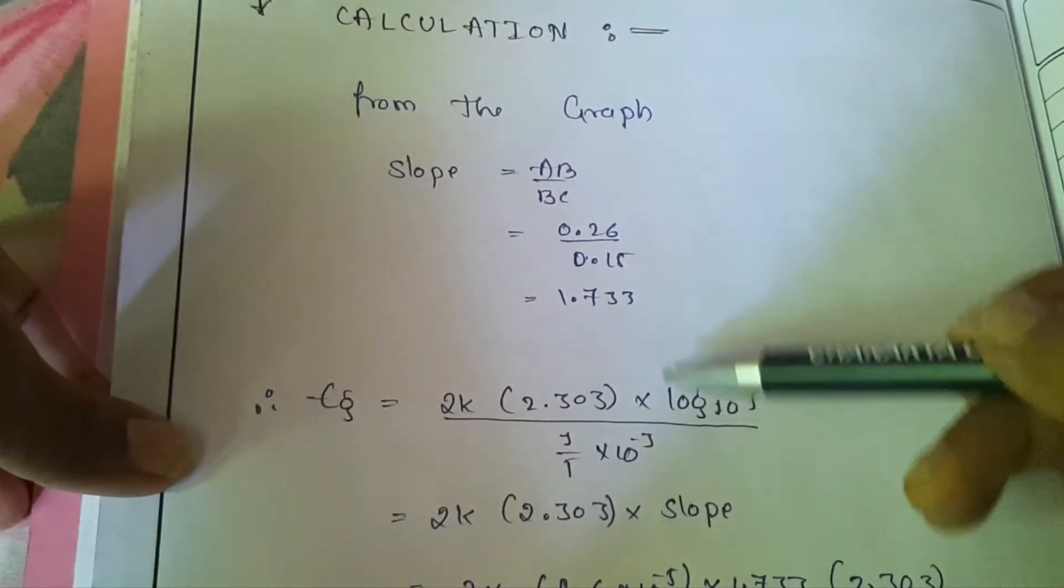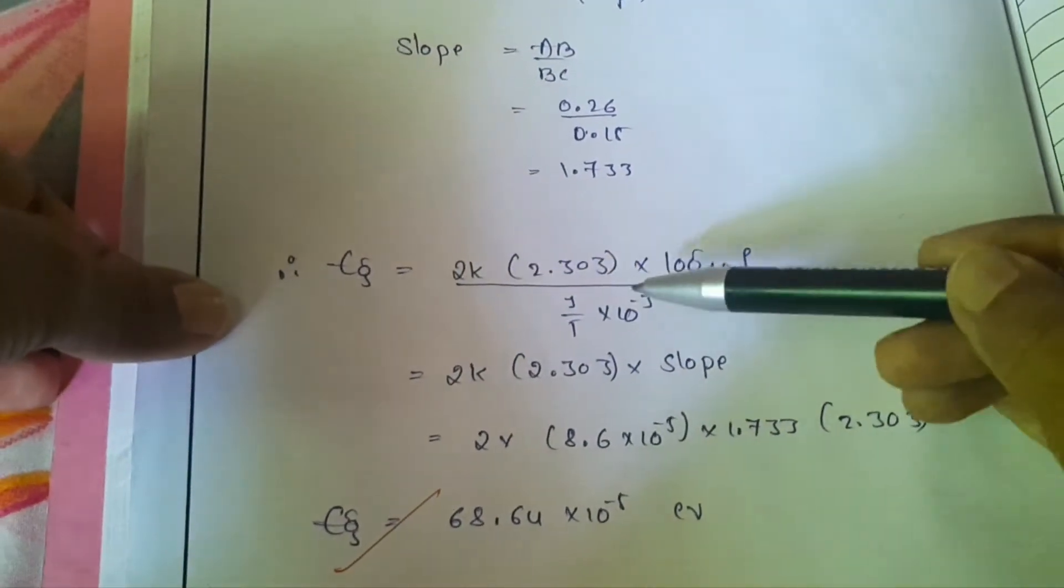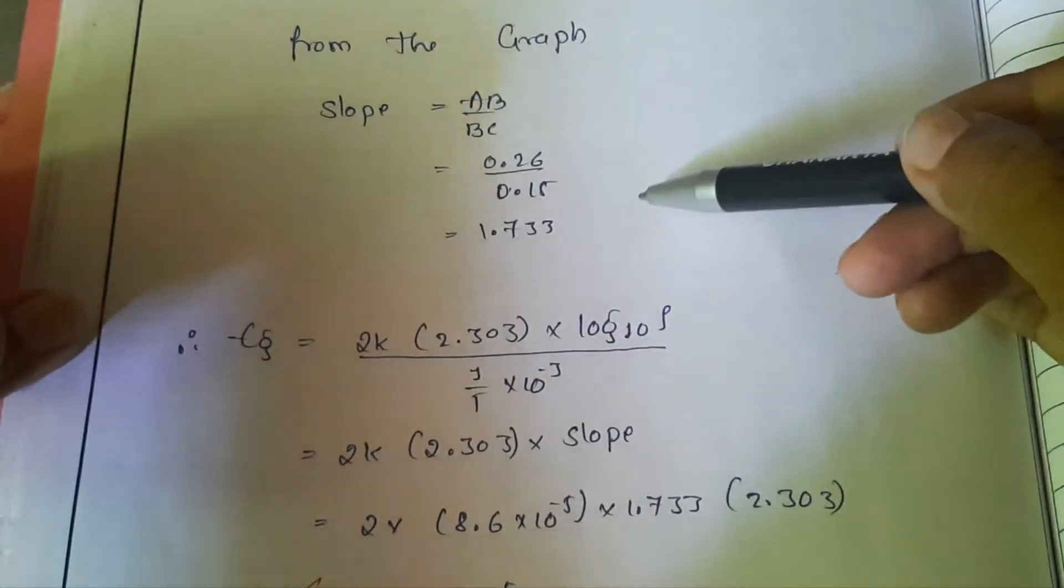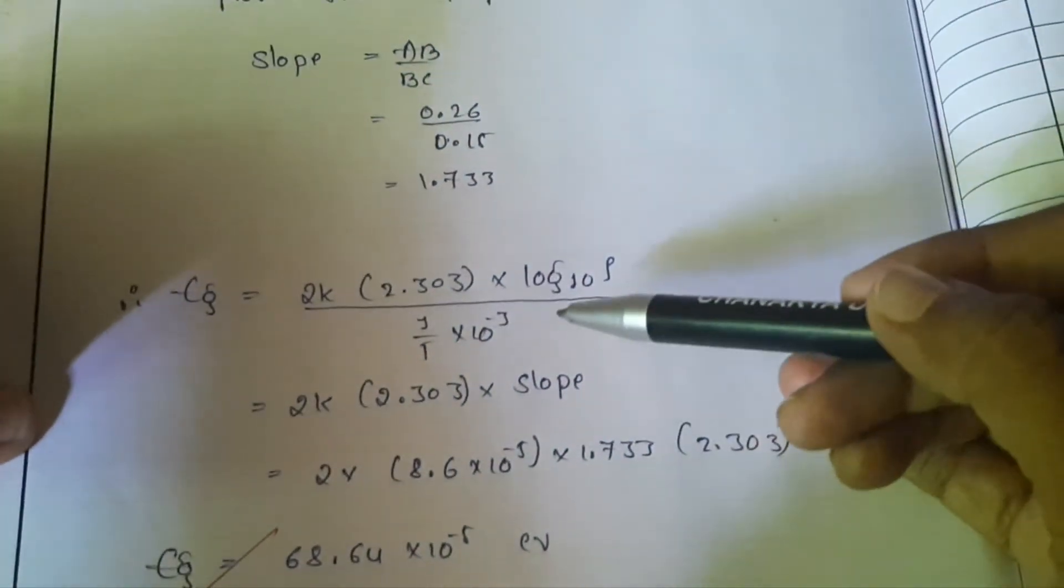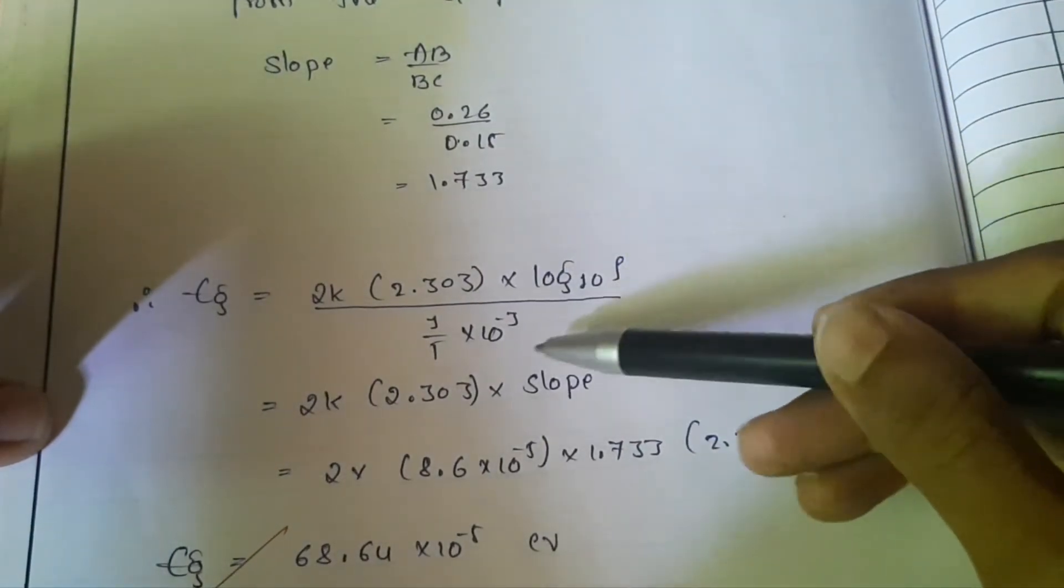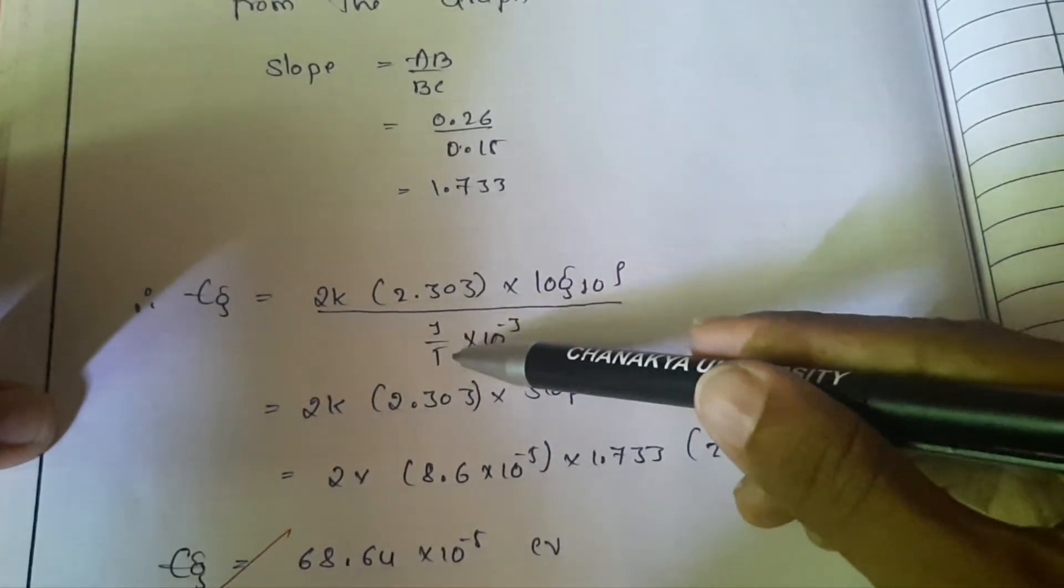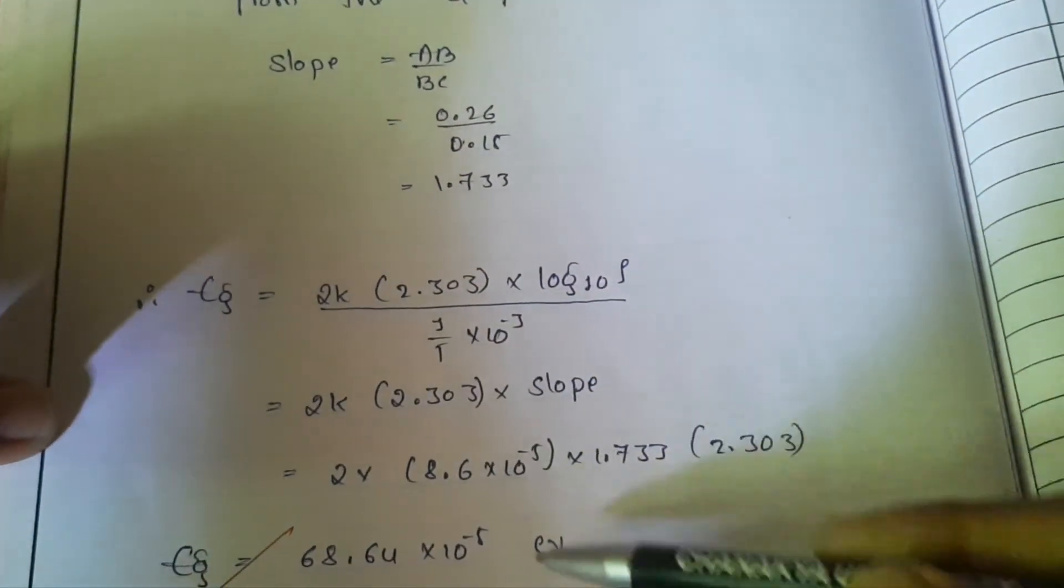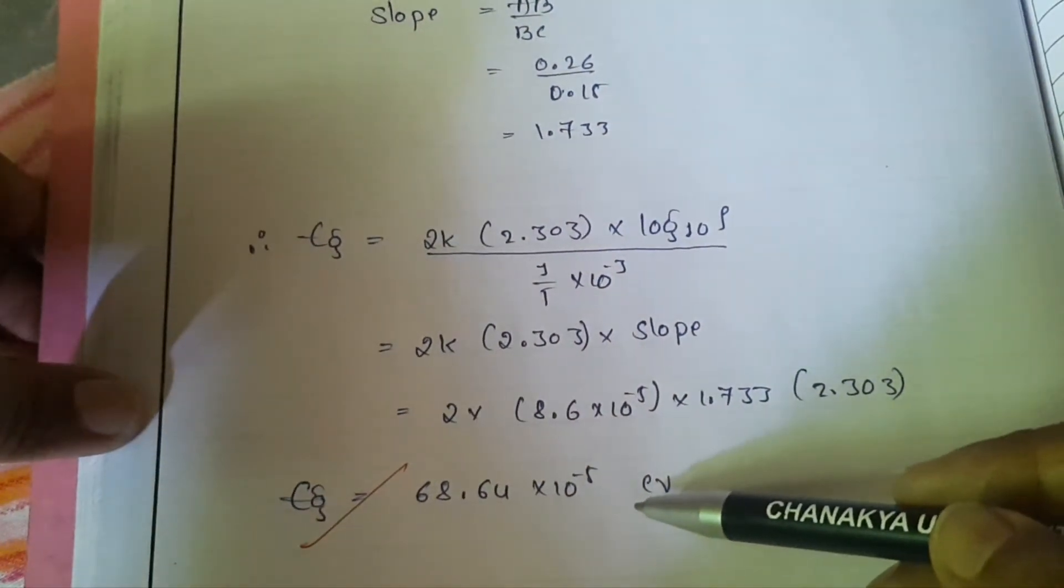We have to use the slope to calculate energy gap. This is the formula to calculate energy gap: 2K into 2.303 into log rho by 1 by T into 10⁻³. Log rho by 1 by T is what? Slope, that is 1.733. K is the Boltzmann constant. If we substitute we will get the energy gap.